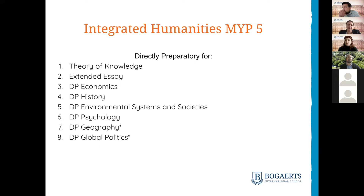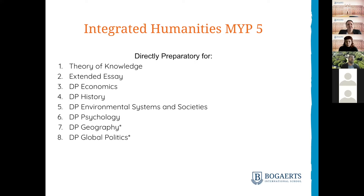MYP5 Integrated Humanities prepares for Theory of Knowledge, Extended Essay — which all DP students take — and then Economics, History, ESS, Psychology, Geography and Global Politics. There's always a conversation about expanding DP course offerings, but the point is we want students prepared for DP by integrating key components, terminology and concepts.